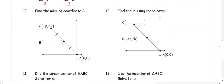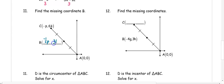In number eleven, find the missing coordinate. Because we have a segment bisected into two congruent parts, and A is at the origin (0, 0), we can divide the coordinates by 2 to get the B coordinates: negative 1/2 P and 3K. In number twelve, if we know the mid-segment and want the endpoint, we would double the coordinates to get negative 8H and 6H.